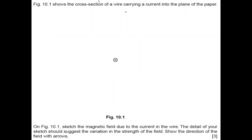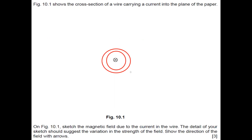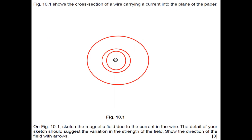For the cross-section diagram, draw circular magnetic field lines around the wire. The first two lines should be closer to each other, and the third should have greater spacing — this shows the strength of the magnetic field decreasing away from the wire. Using the right hand grip rule with thumb pointing into the paper, the fingers rotate to give the direction of the magnetic field.